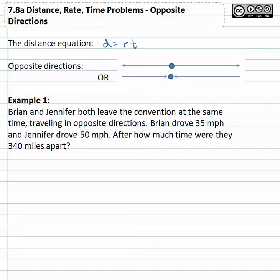As we begin to look at these problems we're going to have two situations. One where there's two individuals that start at the same spot going in opposite directions. We can multiply the rate of the first person times their time, and the rate of the second person times their time, to get the two distances. To find the total distance traveled, we add these two distances together.